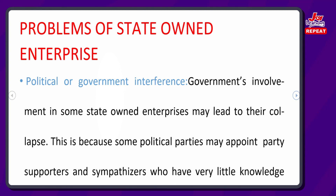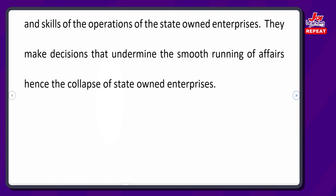This is because some political parties may appoint party supporters or sympathizers who have very little knowledge and skills in the operation of the state-owned enterprise. For example, if a president appoints a family member who is not qualified for a position, she will not be able to run the organization smoothly, and decisions may undermine the smooth running of affairs, hence the collapse of the enterprise.